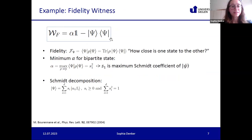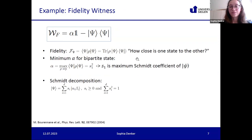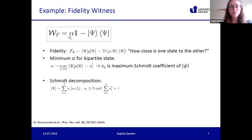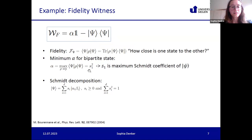A standard example of an entanglement witness is the fidelity witness. It makes use of the fact that a state close to an entangled state must be entangled too. One uses the fidelity — a measure of how close one state is to another — and defines the witness so it detects all states that exceed a certain threshold alpha. We then wonder: how small can we choose alpha such that this is still positive on all separable states?